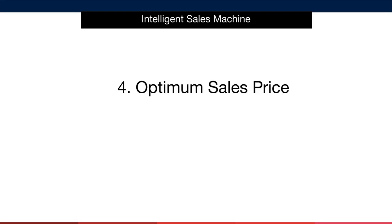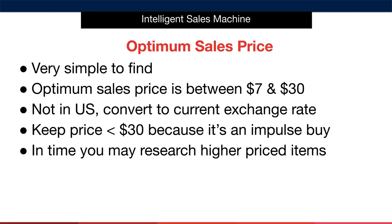Element four, optimum sales price, is very simple to find and log in the spreadsheet. This will only take a minute or less to show you. All we need to do is define what price the seller is selling the item for on Amazon and determine whether or not that item is selling for what we call the optimum price. We don't want to sell items that are $7 or five pounds approximately or less due to Amazon's fee structure.